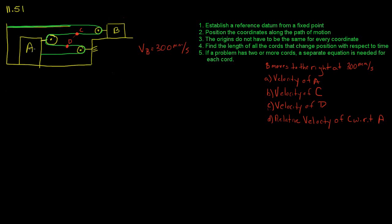In the system we are given, we have two blocks: block A and block B, that are connected to each other with one chord. This chord is connected at a fixed point. We are told that B moves to the right at 300 mm per second. We are asked to find the velocity of block A, the velocity of point C, the velocity of point D, and the relative velocity of C with respect to A.